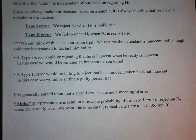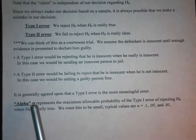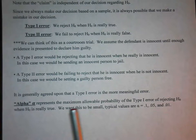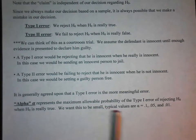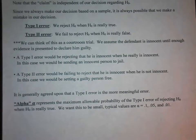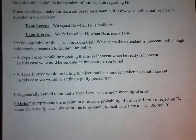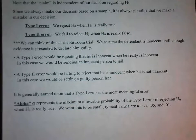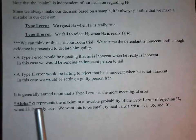Alpha — this little Greek letter — represents the maximum allowable probability of the type 1 error of rejecting H₀ when it's really true. We want that to be small. Typically, values for alpha are .1, .05, and .01. Basically, we want the probability of sending an innocent person to jail to be very small — we don't want that to happen often. That's how you want to think about alpha.